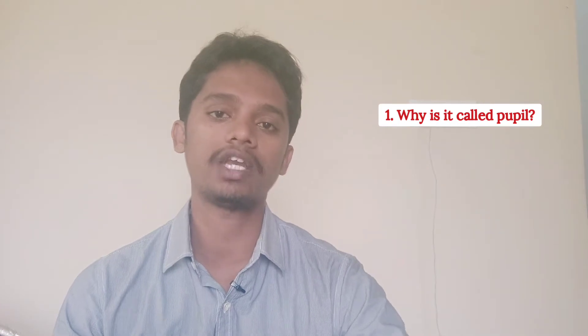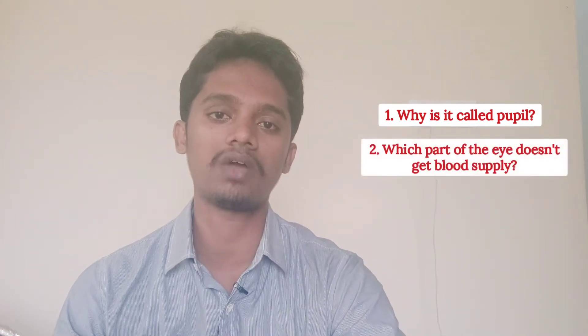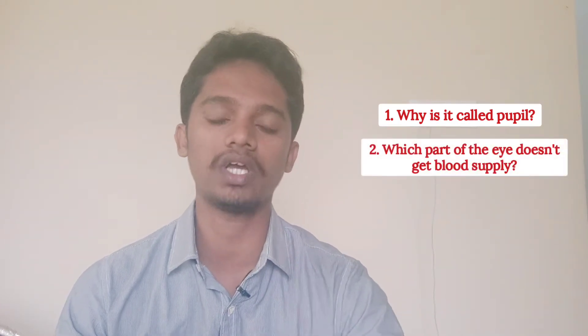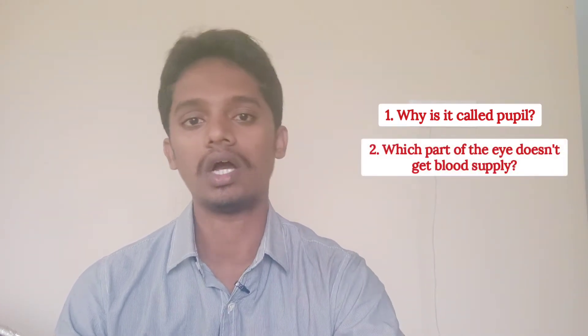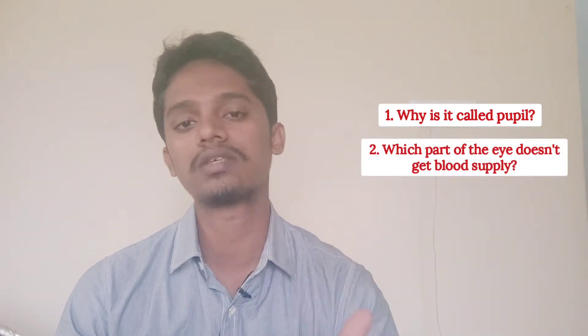Hello everyone. In this class, we will learn two pieces of information about the eye. The first information is about the pupil — why is it called pupil? The second information is: which part of the eye doesn't get blood supply?